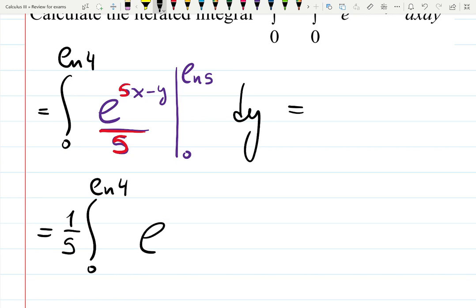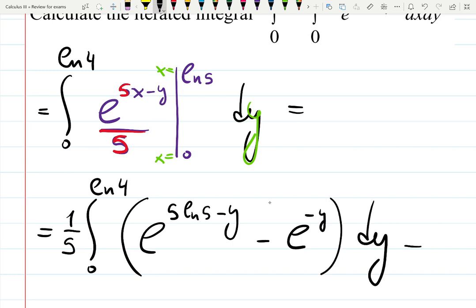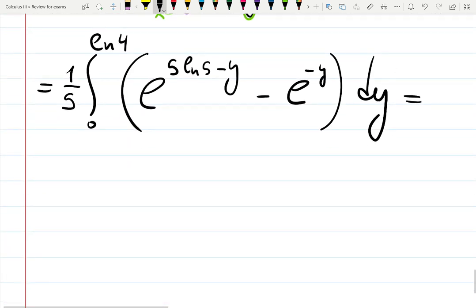It will be integral from 0 to natural log of 4. E to the 5 and then 5 minus y. Do you know how I remember that we're plugging x's not y's? Because y is still waiting to be integrated and because we just finished integrating with respect to x, so that's how I know which one to plug. Minus e to the 5 times 0 minus y. This should be integrated with respect to y.